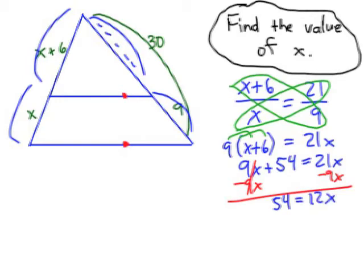Divide each side by 12 and what is 54 divided by 12? That's right, X equals 4.5.